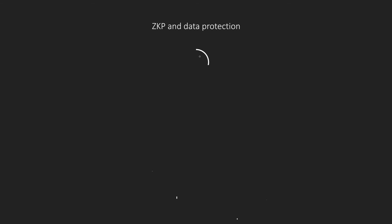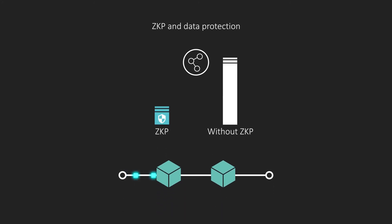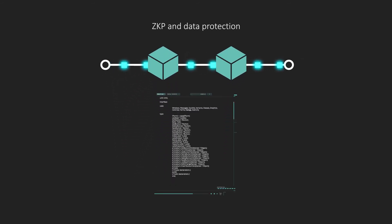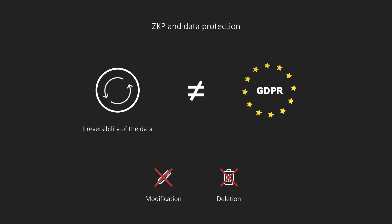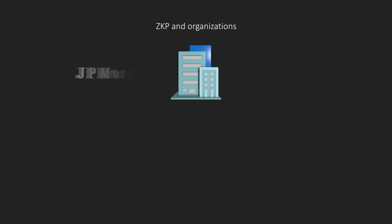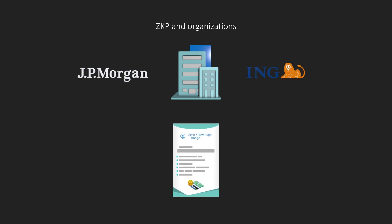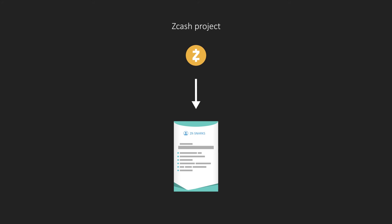How does ZKP help with data protection? ZKPs allow for a significant reduction in data sharing, which is especially important when dealing with sensitive data. ZKPs are starting to be used particularly in the field of blockchains. It is problematic to share personal data within a blockchain due to the permanence of data inscribed in it, as well as new data regulations. The irreversibility of the recorded data prevents modification or deletion, which is contrary to the spirit of the European GDPR, for example. Some organizations are beginning to develop solutions using zero-knowledge proof. In the banking sector, JP Morgan and ING are using zero-knowledge range proof, which enables transactions to be validated without using exact data. Similarly, the Z-cash project relies on ZK-SNARKs, a specific form of non-interactive ZKP.